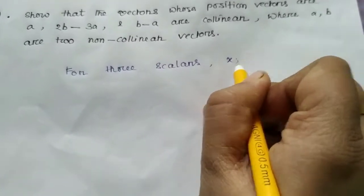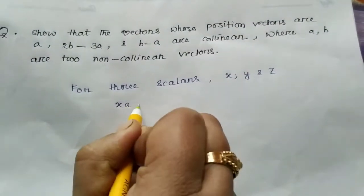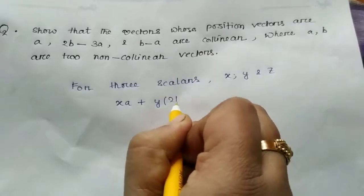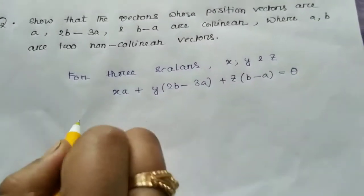x, y, z. We can write the equation xa plus y into 2b minus 3a plus z of b minus a equal to theta.